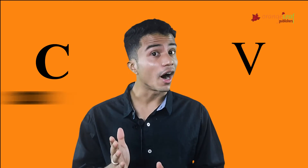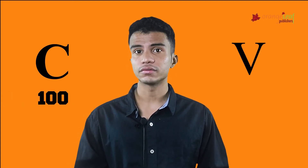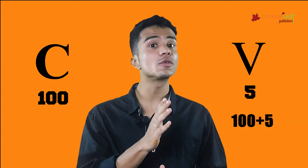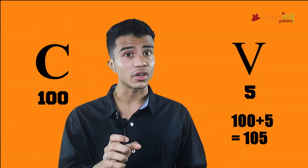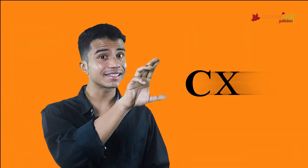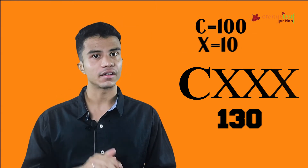Let's take another example: C and V. What does C stand for? 100. And what does V stand for? 5. So when we read them together, it is 105. Now what does C, X, X, and X stand for? We have 1 C and 3 X's. It is 130, because C has the value of 100 and X has the value of 10.